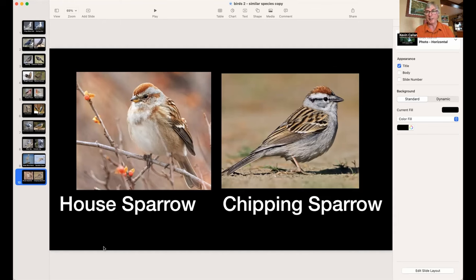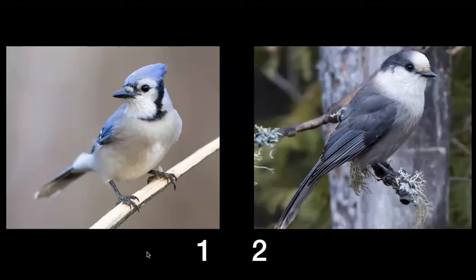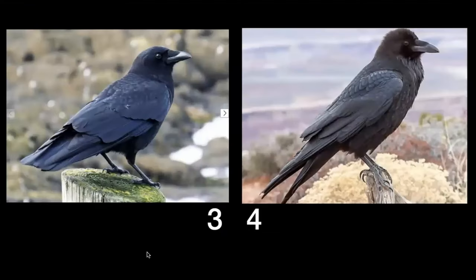Now get ready for the test — birds that look similar but aren't. Good luck. Number one: is this a Blue Jay or a Gray Jay, Whiskey Jack, Canada Jay? Number two: number three — is it a Crow or a Raven? Number four — Crow or Raven? Remember one is bigger than the other, one has more of a mustache and beard.